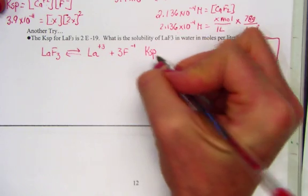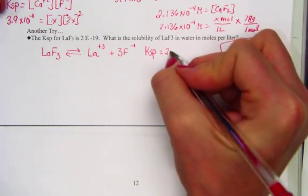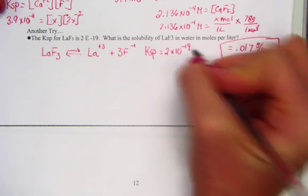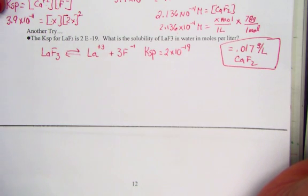Ksp's are either found in our appendix D or provided in the problem: 2 times 10 to the negative 19th. Quite a small number. This must not be very soluble. I would expect quite a small answer.